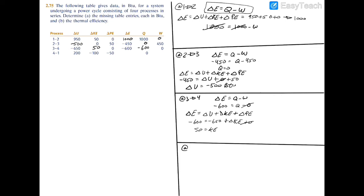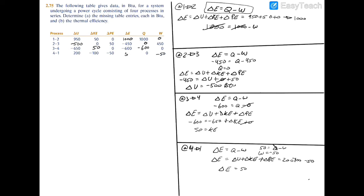Finally, for process 4 to 1, we have delta E equals Q minus W, and delta E equals delta U plus delta KE plus delta PE. Delta E works out to 200 minus 100 minus 50, giving delta E equal to 50 BTU. With Q equal to 0, we get W equal to negative 50 BTU.